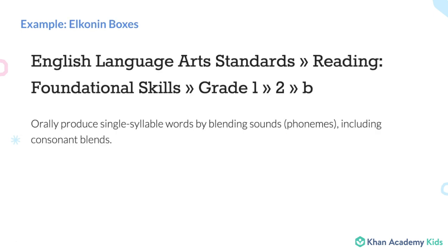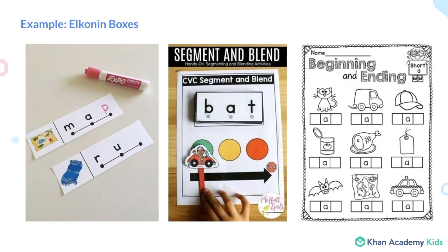In addition to math, we cover reading standards like orally producing single-syllable words by blending sounds, which are called phonemes. To read words, kids need to understand several things: they need to know the individual letter sounds, and they need to understand how the individual sounds blend from left to right to form a word.